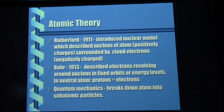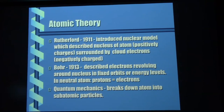Rutherford came along in 1911, and he was really the first one to kind of come up with this idea that electrons and protons existed together. He wasn't really sure how they worked. He thought that the positively charged area of the atom — the nucleus — was like a cluster, surrounded by just kind of a random cloud of electrons. It took thousands of years to get to this point, but once we started keying in on some of this stuff, the advances came really, really quickly.